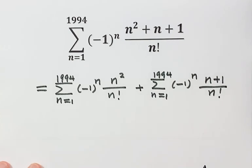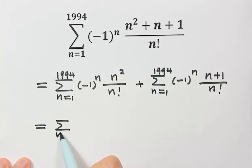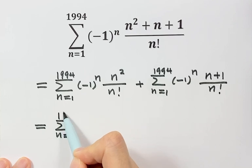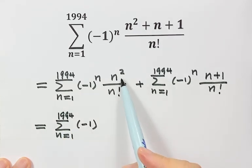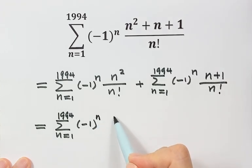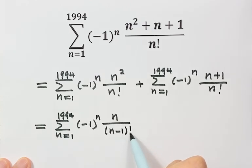Next, we're going to simplify the first sum. Because the top and bottom have a common factor, n. So both top and bottom cancel the n. So here we have n on top and n minus 1 factorial on the bottom.